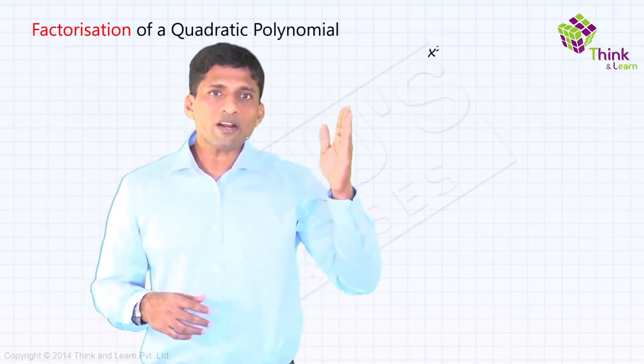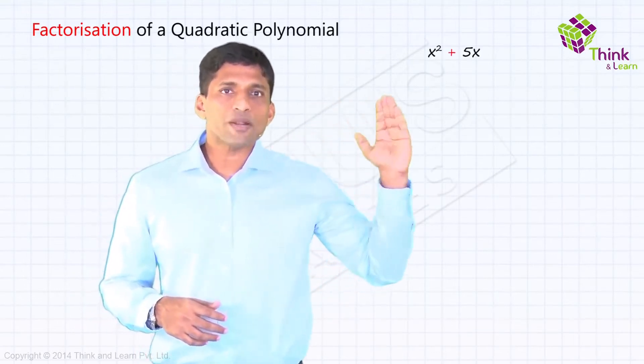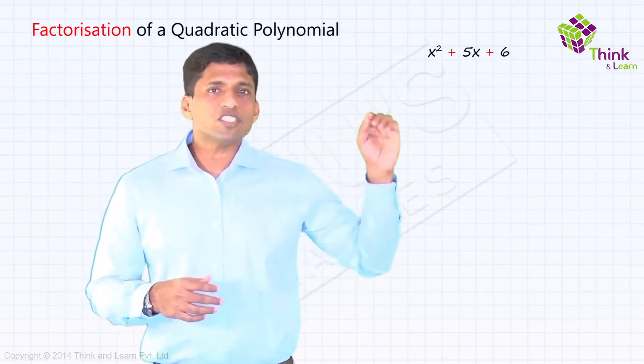For example, take x square plus 5x plus 6. Now when it's an equation, we will make it equal to 0.